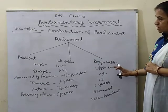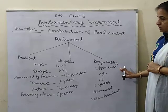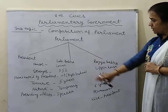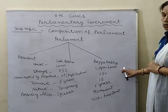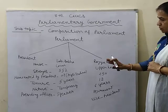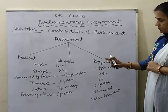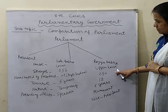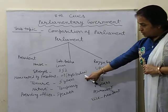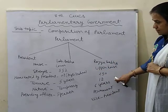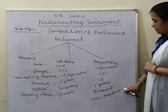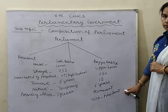In this way, we have seen that Parliament has two houses — Lok Sabha and Rajya Sabha. Lok Sabha is also called the House of the People, and Rajya Sabha is also called the Council of States. Lok Sabha is the lower house with strength of 552, and Rajya Sabha is the upper house with strength of 250. Nominated by President: 2 in Lok Sabha and 12 in Rajya Sabha. Tenure: 5 years for Lok Sabha and 6 years for Rajya Sabha. Lok Sabha is a temporary house and Rajya Sabha is a permanent house. Presiding officer of Lok Sabha is the Speaker, and of Rajya Sabha is the Vice President. Thank you.